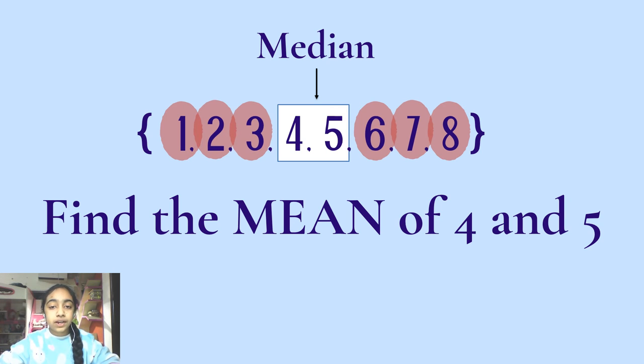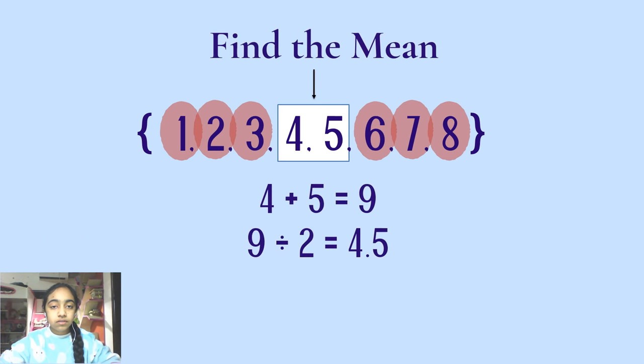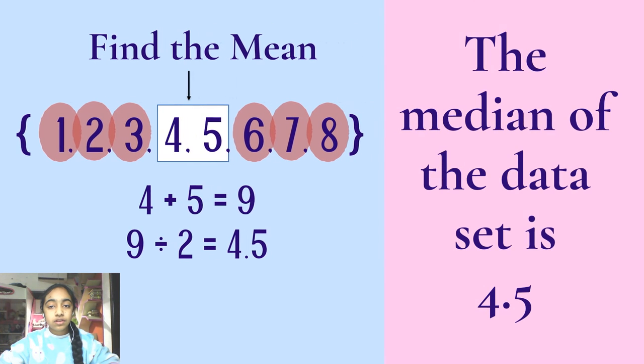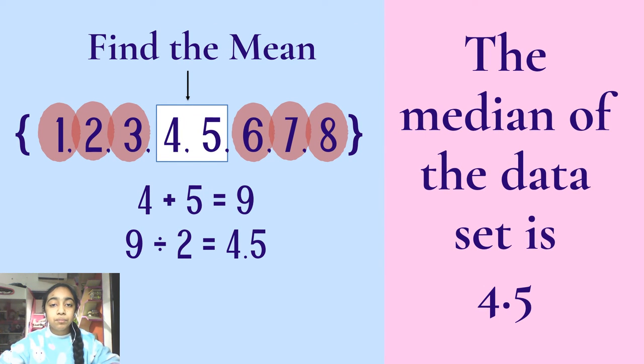In my last video, I have explained about what is mean and how to find it. So the way to find the mean of 4 and 5 is to first add the 2 numbers and the sum is 9. We then divide 9 by 2 as we are finding the mean of 2 numbers, 4 and 5. So 9 divided by 2 is 4.5. So that means the median of this data set is 4.5.